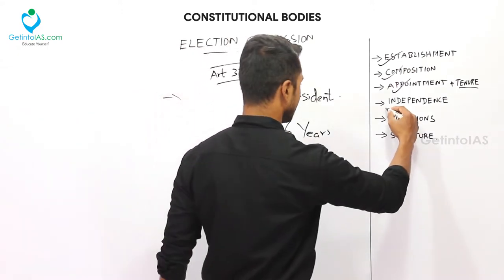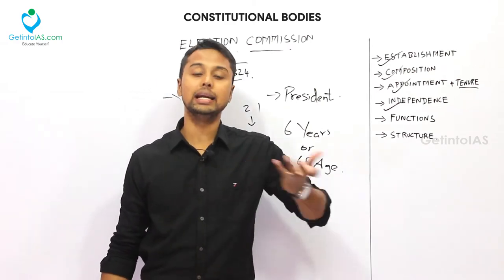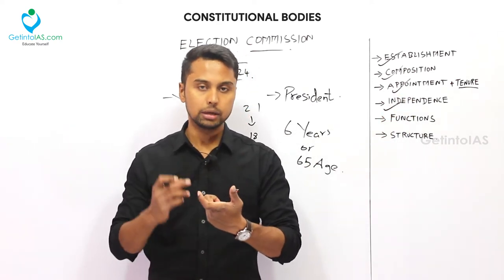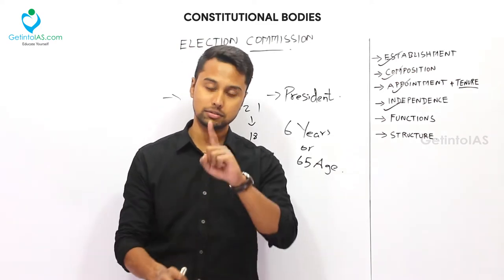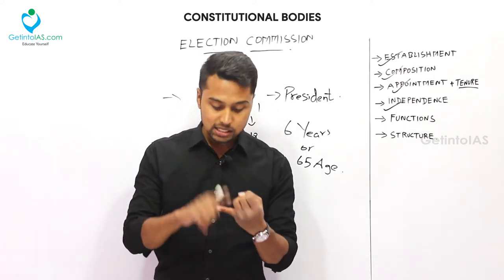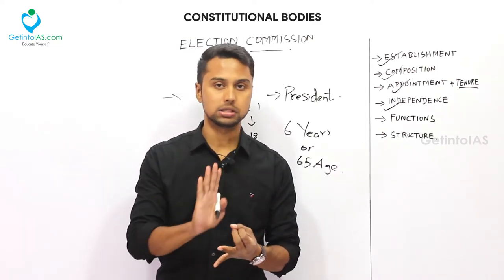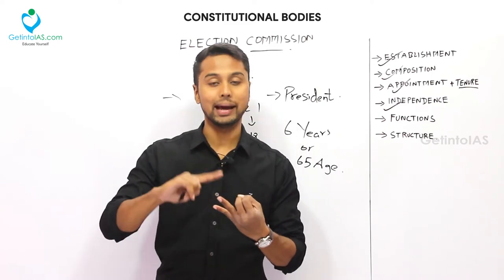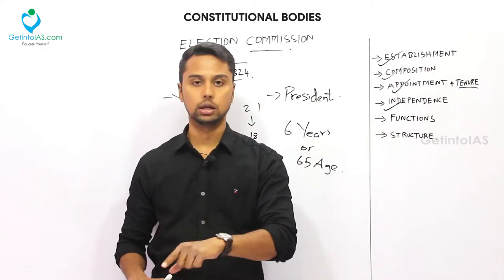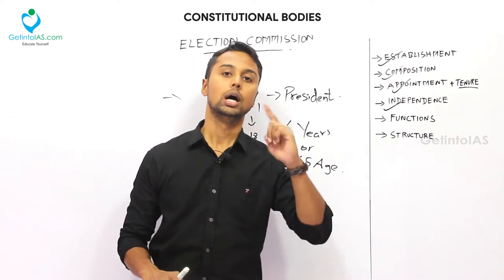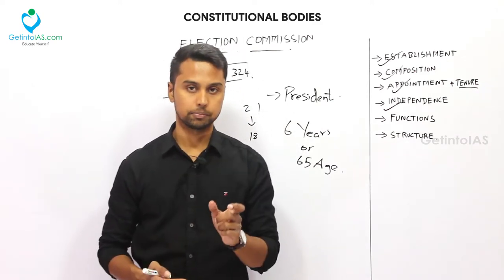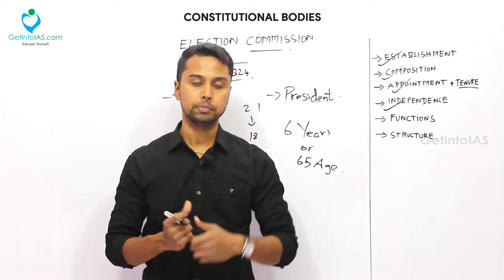The Election Commission is a permanent as well as an independent body. The first aspect of its independence is the service conditions: they are determined by the President but cannot be modified after appointment. The second point is about removal — although the commissioners are appointed by the President, they cannot be removed easily. The removal process is the same as that of a Supreme Court judge, which is quite difficult.